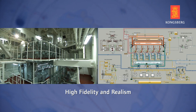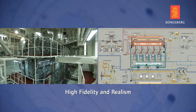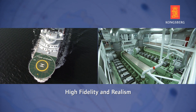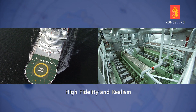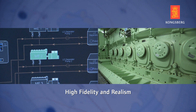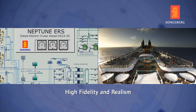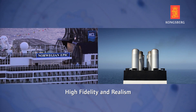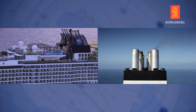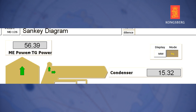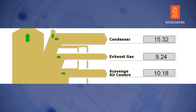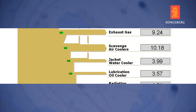K-Sim engine's model library includes high, medium, and low-speed diesel engines, plus gas turbine, diesel electric, water jet, and steam propulsion. All of the simulator's engine models offer fuel economy calculations and support emission reduction training. Some models even have a Sankey diagram, which makes it easy to visualize the energy efficiency of the engine plant.